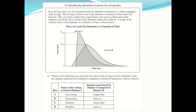Next question: which row describes the status of the airbag in front of dummy 1 and the impulse experienced by dummy 1 compared to dummy 2? In an airbag safety test, two identical crash test dummies are in a vehicle; the airbag in front of one dummy is disabled. Remember that impulse equals force times time. If time is increased, force is decreased.